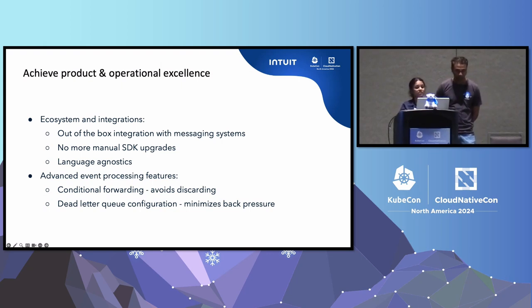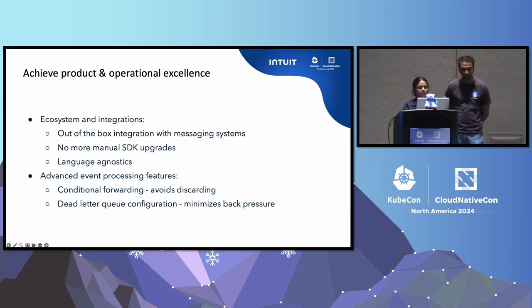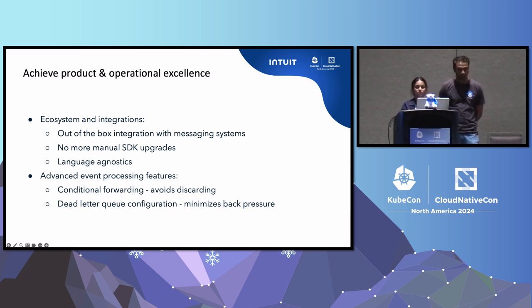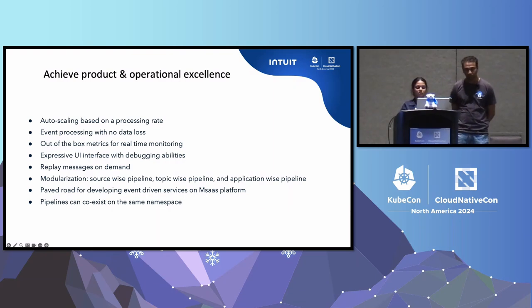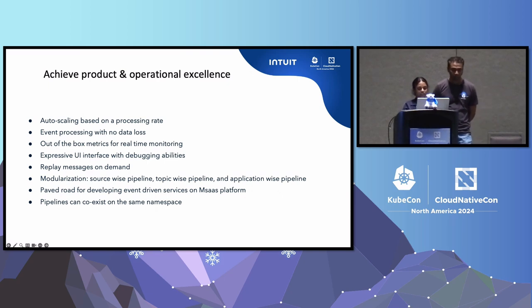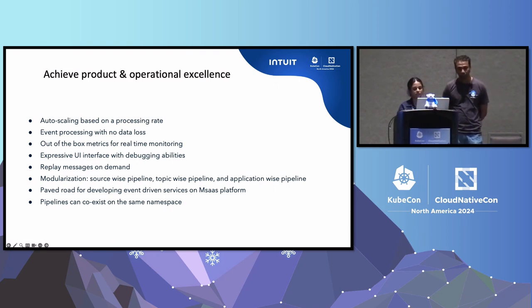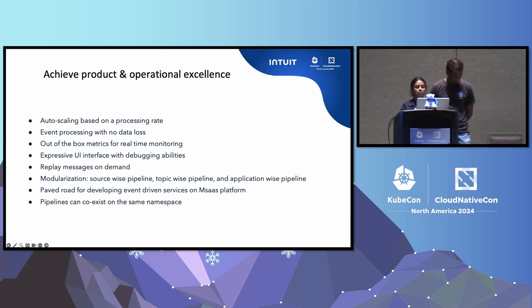Numaflow pipeline for event-driven applications proved beneficial for both product and operational excellence. Product excellence is backed by seamless integration with messaging systems and advanced event processing features, which avoid message discarding and minimize back pressure during database maintenance. On the operational side, we have auto-scaling that starts from zero based on incoming messages and processing rate. Numaflow guarantees no data loss, provides out-of-the-box metrics for real-time monitoring, and comes with an expressive UI with debugging abilities — a huge benefit for on-call teams — and the ability to replay messages on demand.